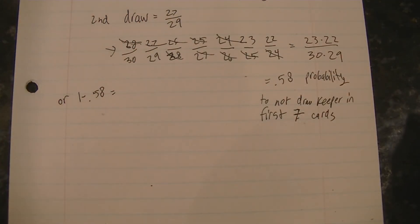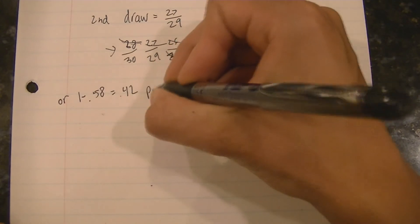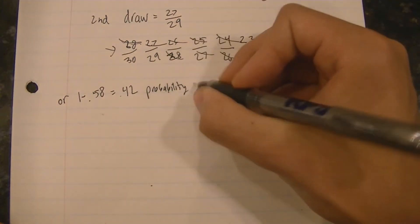And we'll find that 1 minus 0.58 gives us a 0.42 probability to draw a Keeper in the first seven turns.